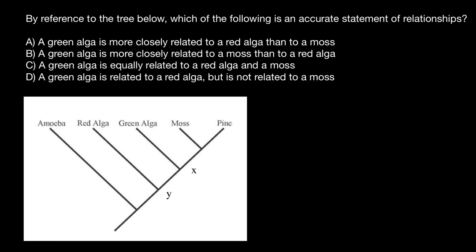Hello, and welcome to Nikolai's genetics lessons. In this video, we are going to talk about phylogenetic trees. And here's a question: by reference to the tree below, which of the following is an accurate statement of relationship? And here are the variants to choose from.